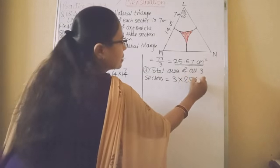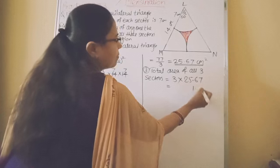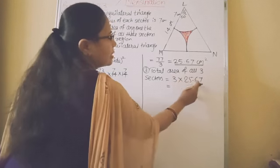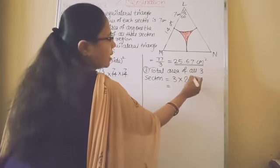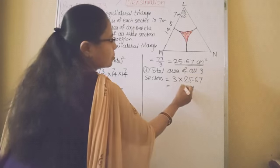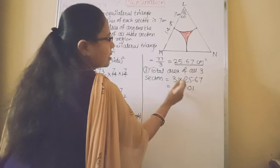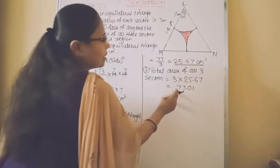25, 6, 7. 25, 6, 7. 3, 7's are 21. Carry 2. 3, 6's are 18. 18 plus 2, 20. Carry 2. 3, 5's are 15. 15 plus 2, 17. Carry 1. 3, 2's are 6 plus 1, 7. 17.